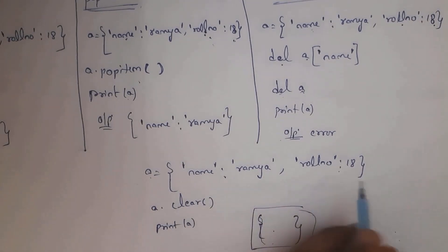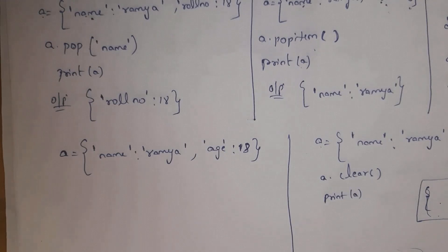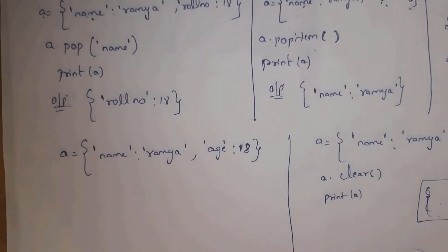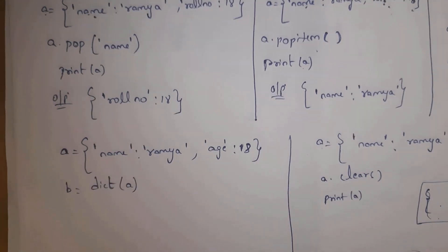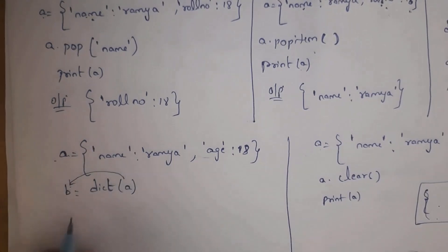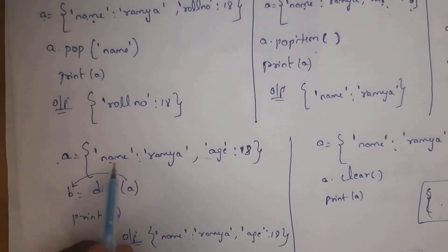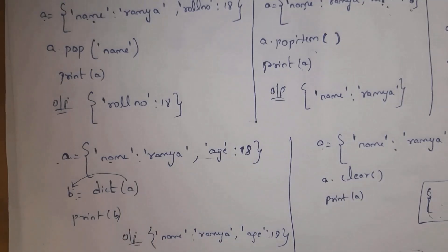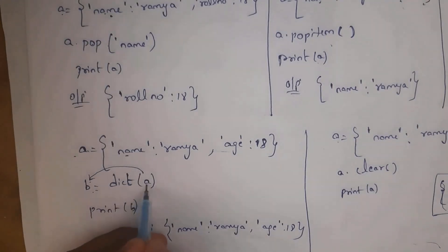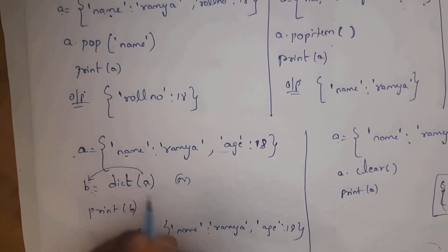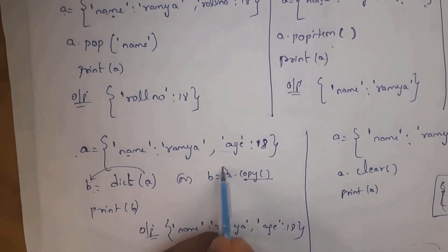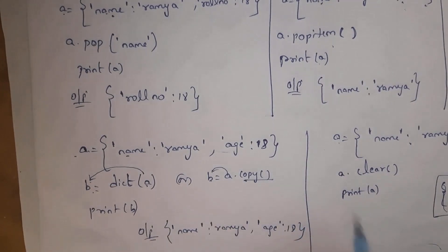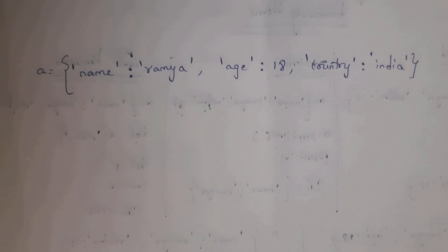You can copy a dictionary from one variable to another. If variable a contains {'name': 'ramian', 'age': 18}, write b = dict(a) using the dict() constructor to copy the dictionary to variable b. Then print(b) gives {'name': 'ramian', 'age': 18}. Alternatively, use the copy() method: write b = a.copy() to copy the data from variable a to variable b.